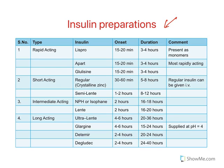Now let us see insulin preparations. They are classified according to their duration of action. You have rapid acting, short acting, intermediate acting, and long acting. The first two classes — rapid and short acting — have a similar kind of duration of action: 3 to 4 hours, or 5 to 8 hours.